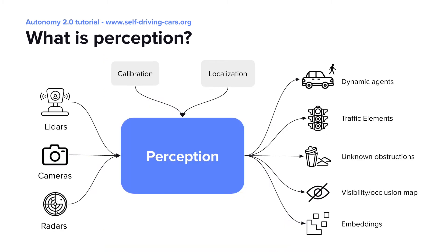To generate these types of outputs we need a perception stack — usually some collection of algorithms that take in a set of sensors and other information to produce the outputs we were describing. Some examples include lidars, cameras, and radars. Lidars use laser beams to provide accurate depth information. Cameras mimic the vision system of a human eye. Radars tend to provide the most accurate velocity information of moving objects. We typically also need calibration and localization to understand the location of the sensors with respect to each other and the location of the self-driving car in the world.